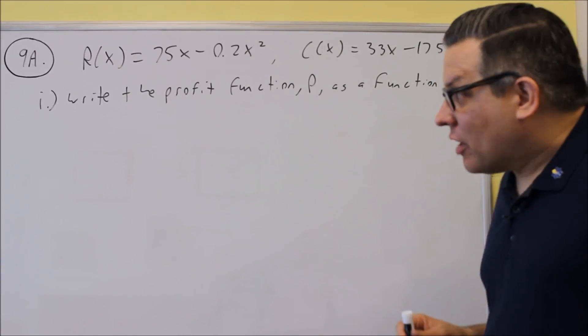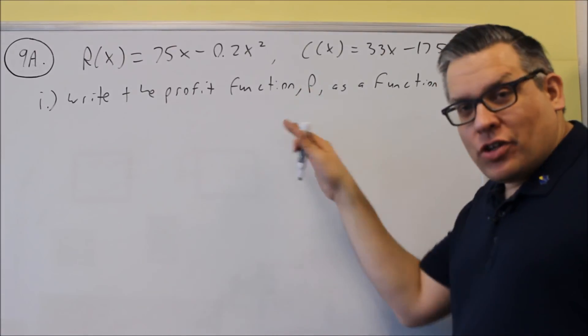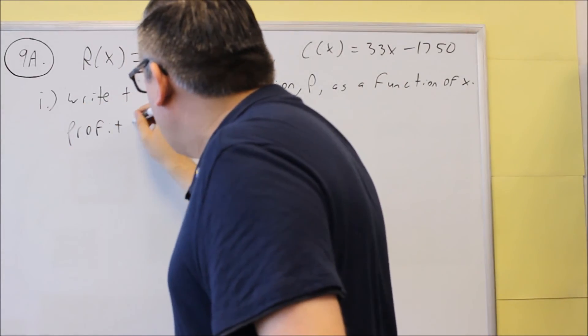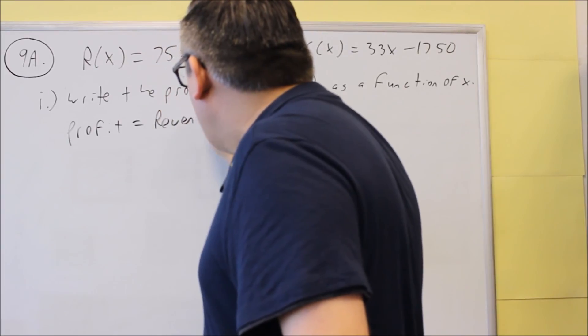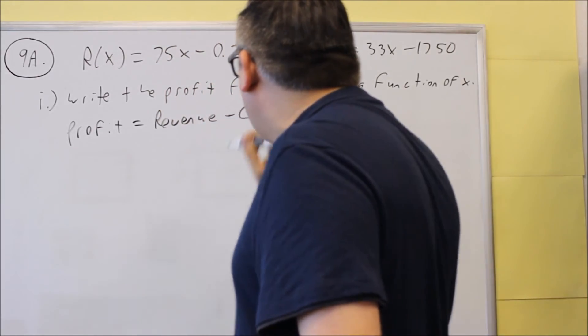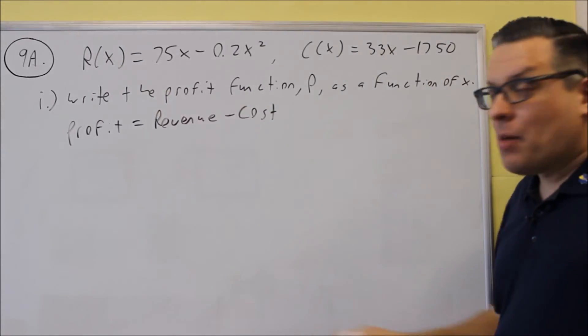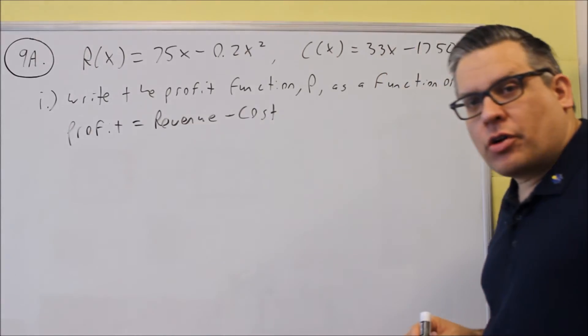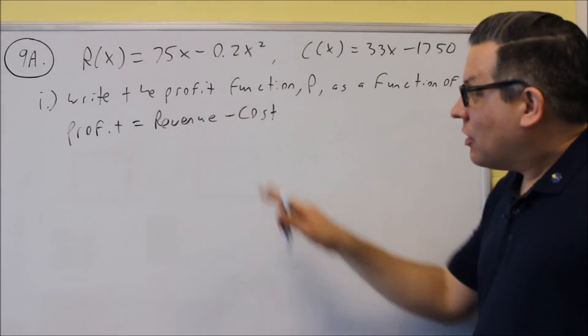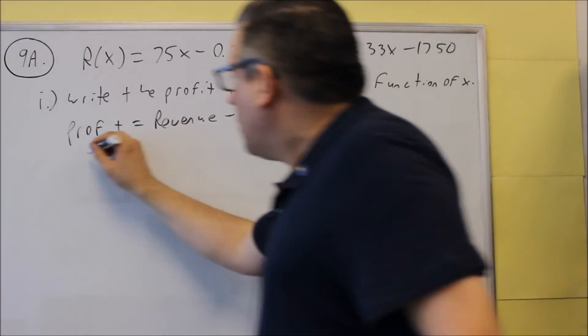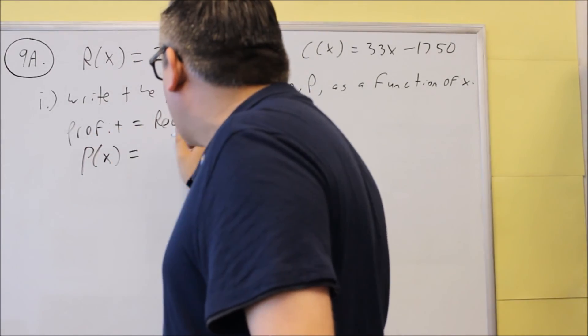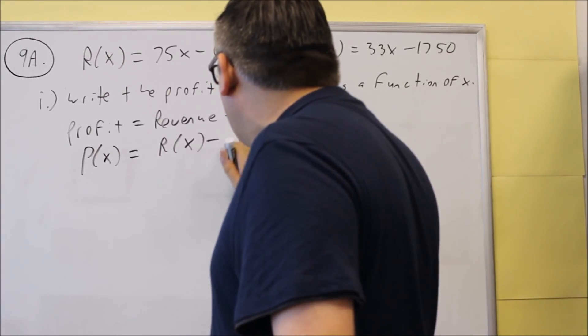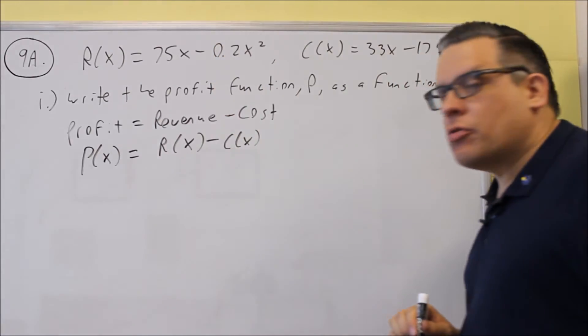We have to know a definition. Profit is equal to revenue minus the cost. If I give a problem similar to this on a test, I'll probably give you the formula for profit—you don't have to memorize that one. So profit equals revenue minus cost. Based on what we have here, that means P(x) equals R(x) minus C(x).